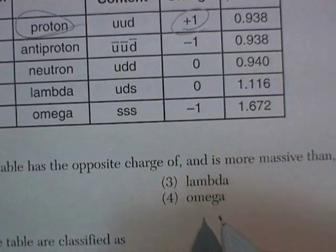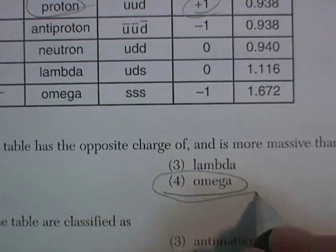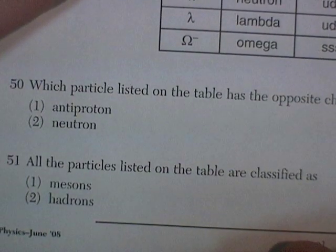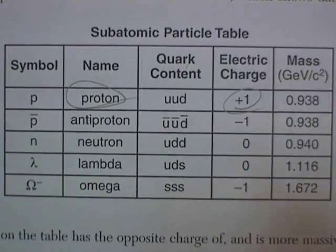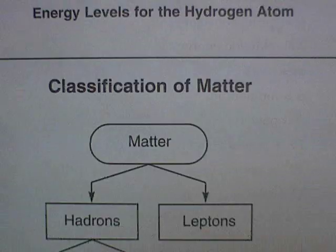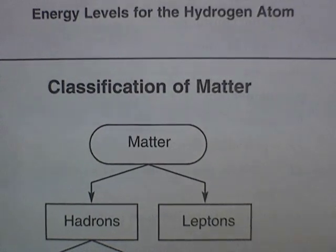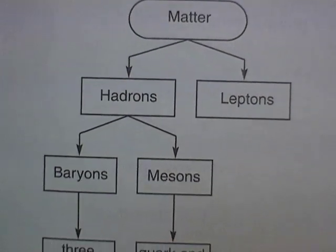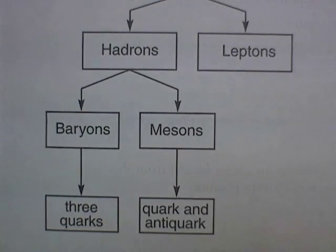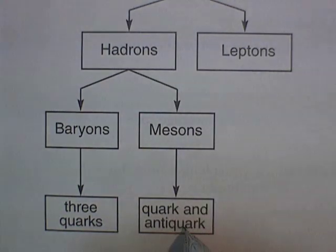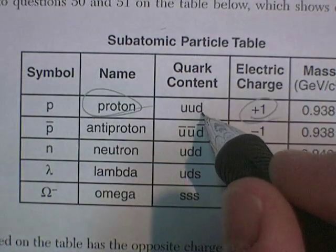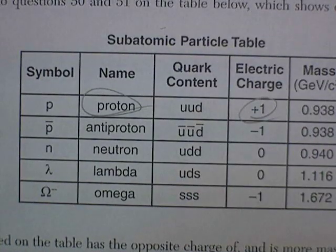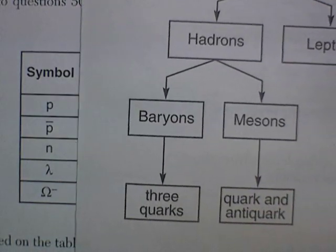Omega — there it is. I don't know what it is, but I got the right answer. Question 51: All the particles listed on this table are classified as... We have another chart for the classification of matter. Matter is broken into two groups: hadrons and leptons. The hadrons are broken into two categories: baryons and mesons. The mesons are made up of a quark and an anti-quark, and the baryons are made up of three quarks. So if we go back and look at the quark content, we find that each of these is made up of three quarks, which makes each one a baryon.